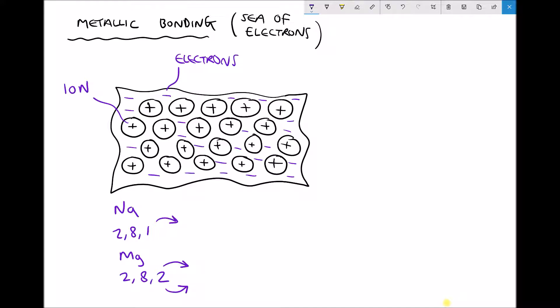As you can see, all of the metals here have become positive because they've all lost an electron, and those electrons are now free to move around that material, hence the name sea of electrons.